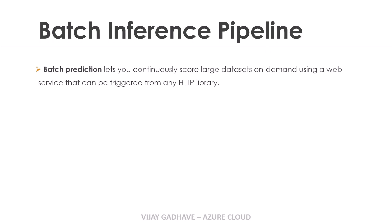Batch prediction lets you continuously score large datasets on demand using a web service that can be triggered from any HTTP library. After deploying the batch inference pipeline, you can make the predictions in batches. That means you can do multiple predictions at a time.